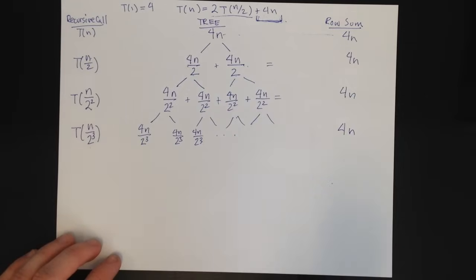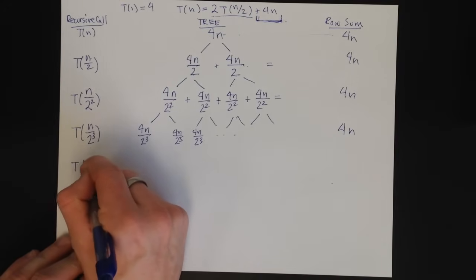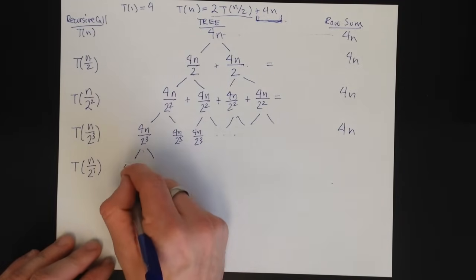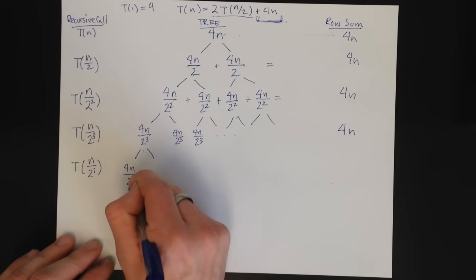The final thing I need to do before I can solve this thing is generalize. So on the T(n/2^i) row, what do I have? Well, each one of these is going to be 4n/2^i.